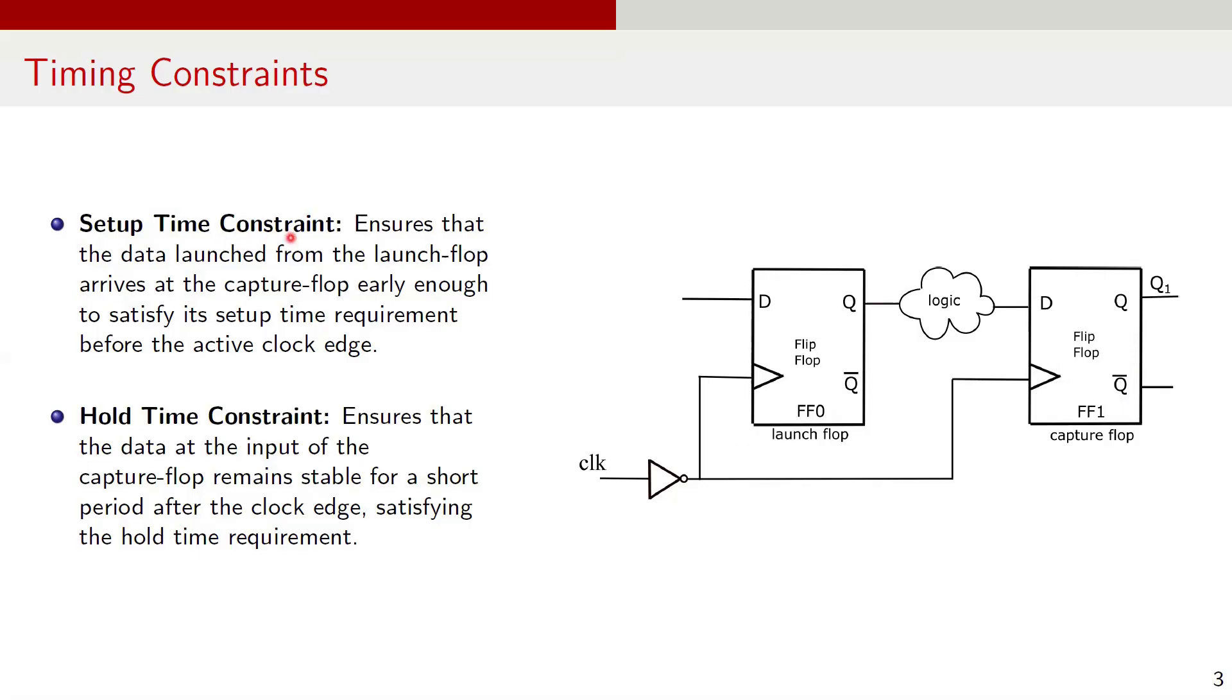There are two primary timing constraints between the launch flop and the capture flop. First is setup time constraint. This constraint ensures that the data launched from the launch flop arrives at the capture flop early enough to satisfy its setup time requirement before the active clock edge. The second constraint is hold time constraint. This constraint ensures that the data at the input of the capture flop remains stable for a short duration after the clock edge, satisfying hold time requirement. Together, these constraints ensure that the data is propagated correctly between the sequential elements.